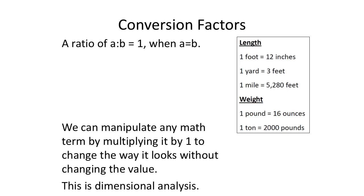Anything divided by itself is one — that's a ratio — as long as the two values are the same. We can manipulate any math term by multiplying it by one to change the way it looks without changing the value. This is dimensional analysis: how we change one unit of measurement into its equivalent measurement but with different units.